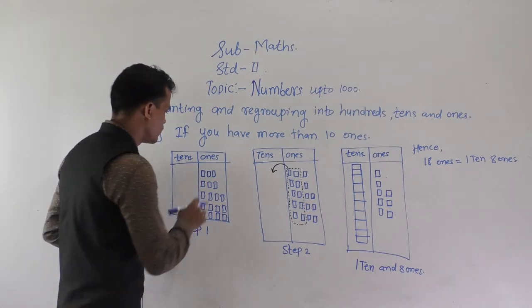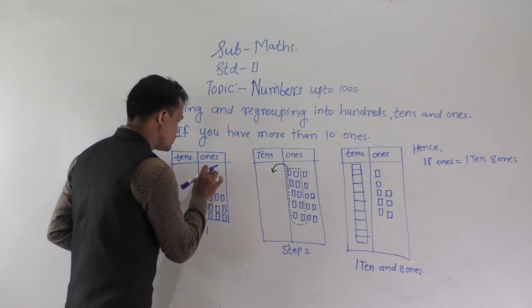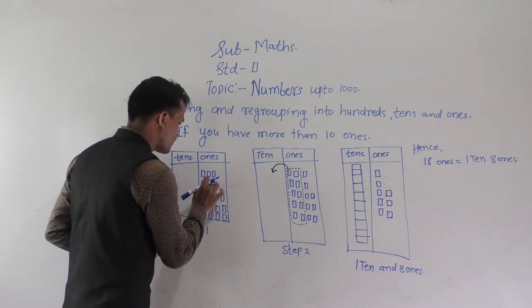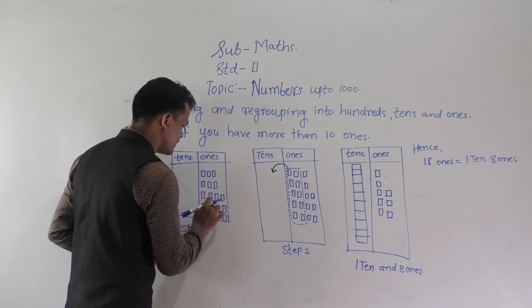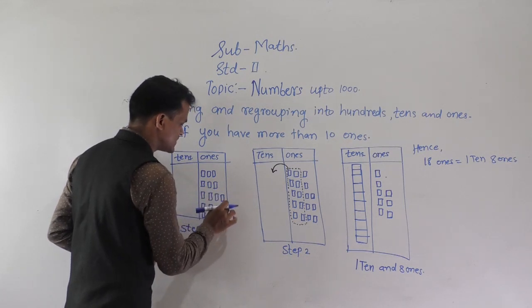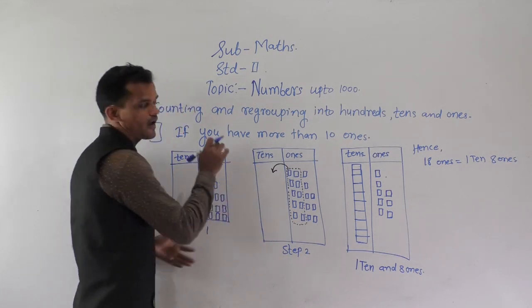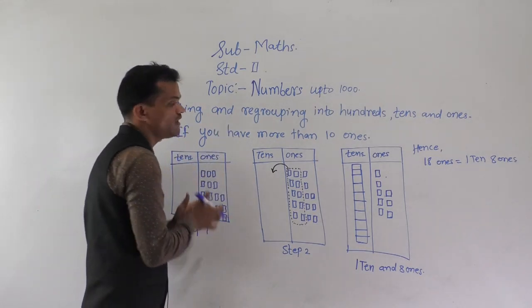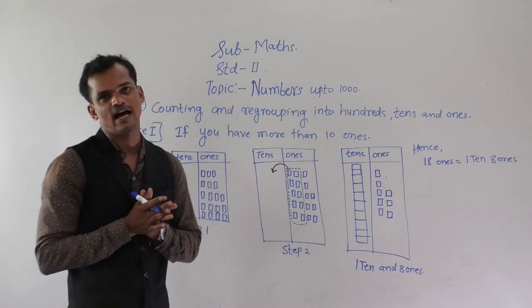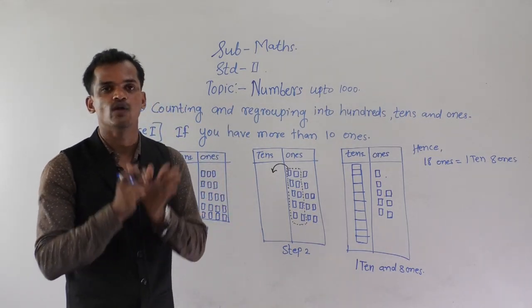We are counting now: 1, 2, 3, 4, 5, 6, 7, 8, 9, 10, 11, 12, 13, 14, 15, 16, 17, and 18. So here 18 ones are there.